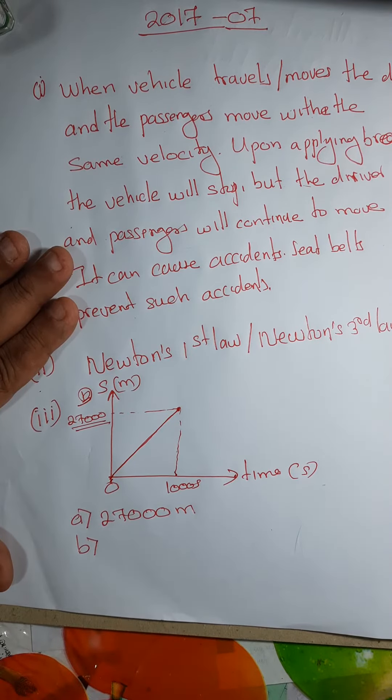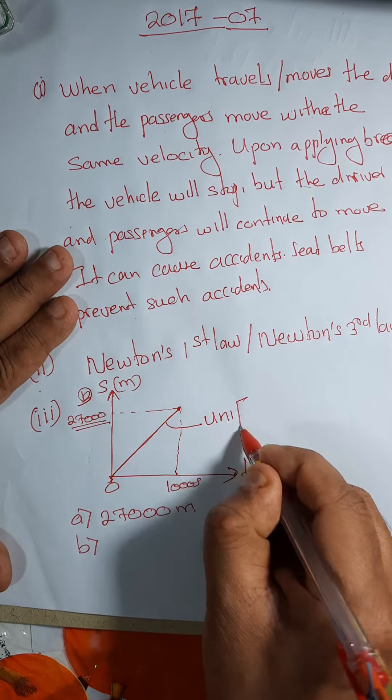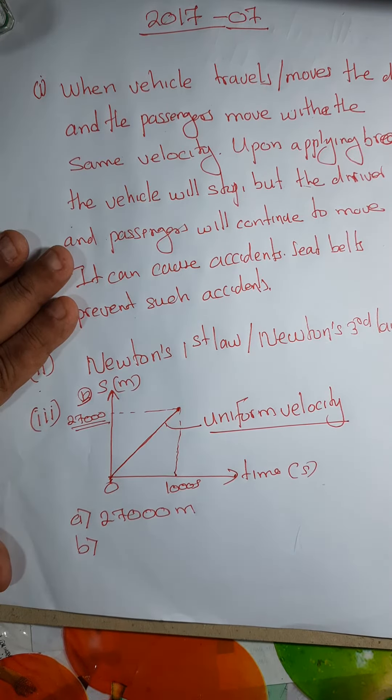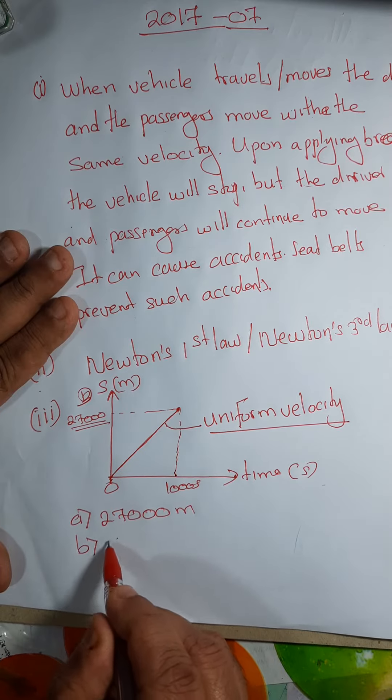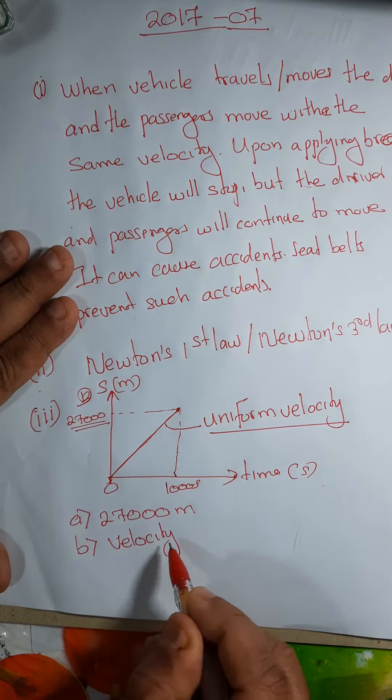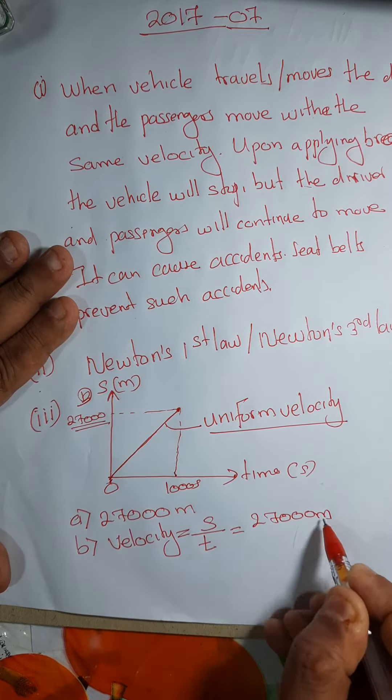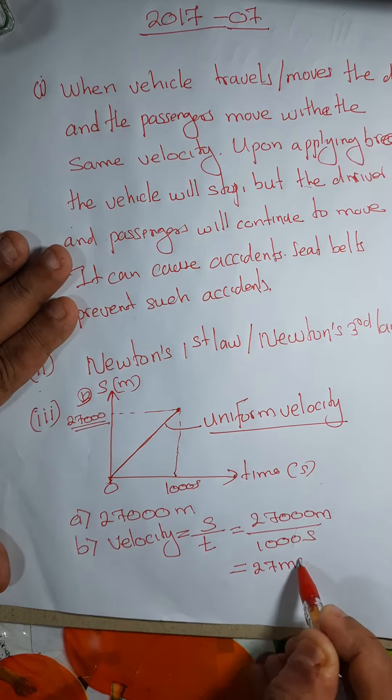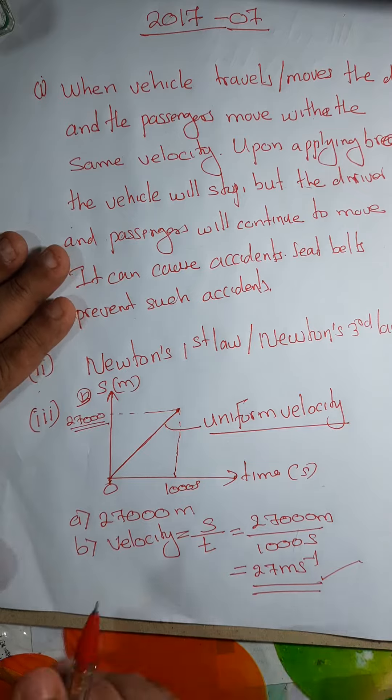In the B question, calculate the maximum velocity. This is indicating uniform velocity. So if you consider it as uniform velocity, then wherever you find, velocity will be same. There is nothing called maximum velocity here. There is only one velocity here. It is a uniform velocity one. So you have to write velocity equals to displacement divided by time. That is 27,000 meters divided by 1,000 seconds. That is 27 ms minus 1. Correct unit should be written. For that you will get separate marks. This is Roman number 3.